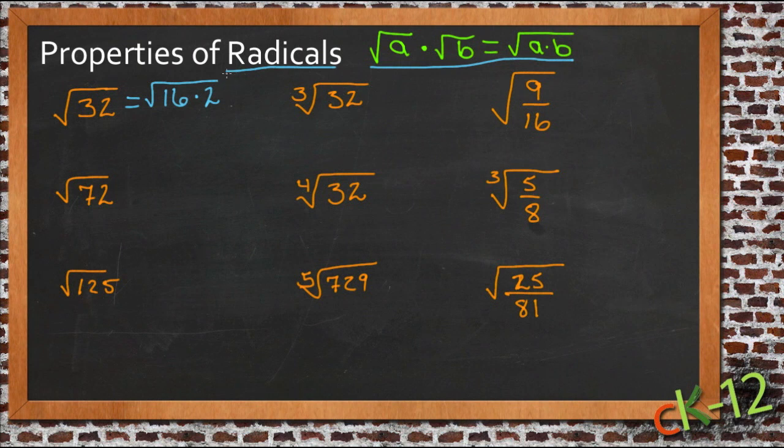And 16 is a number that we know the square root of. It's a perfect square. So we could then break this apart again, using our little trick here, and write this as the square root of 16 times the square root of 2, and then take the square root of 16 out. We know it's 4.